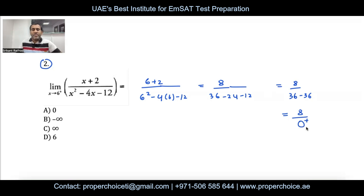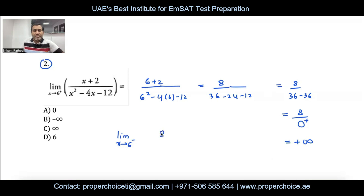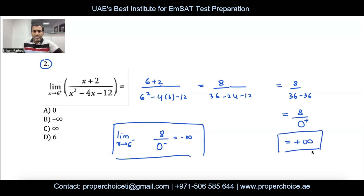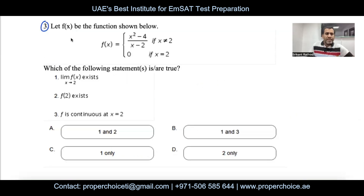Any number divided by zero is infinity in the context of limits. Since we have 8 divided by 0⁺, the result is positive infinity — we go with option C. For comparison, if it were a left-hand limit (x → 6⁻), the denominator would be 0⁻ and we'd get negative infinity. But the question asks for the right-hand limit, so the answer is positive infinity.